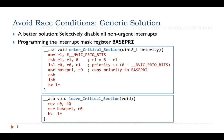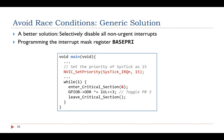Note that on Cortex-M, a higher priority value represents a lower urgency. In the leave critical section function, clearing the BASEPRI register to 0 enables all interrupts.